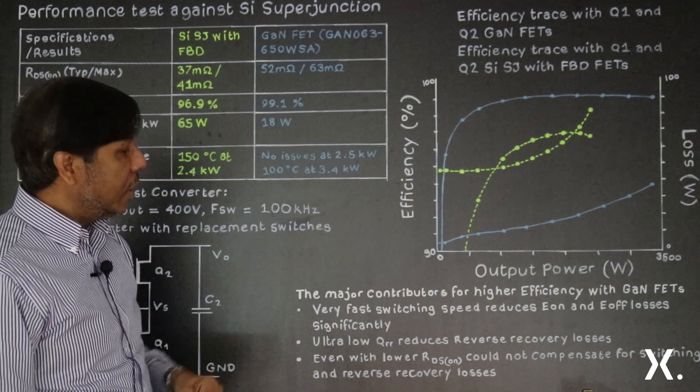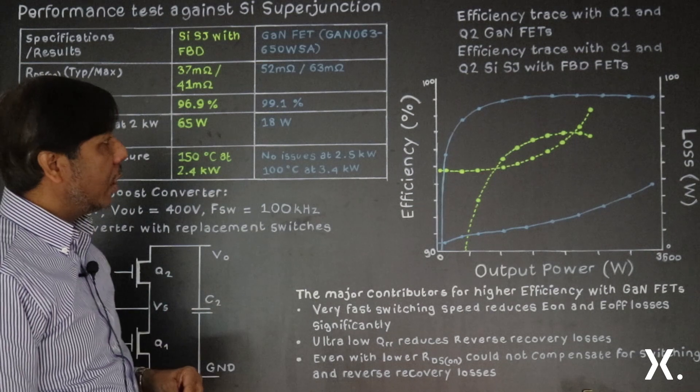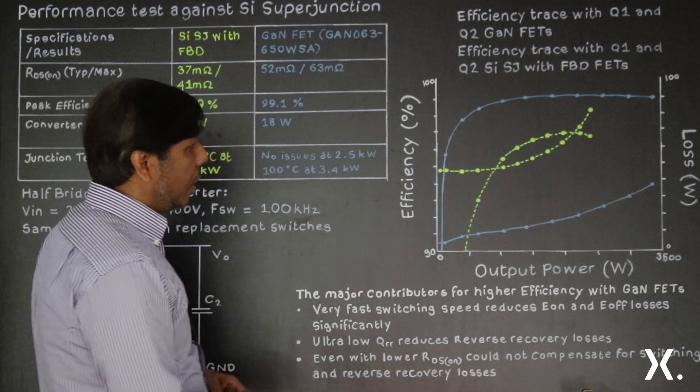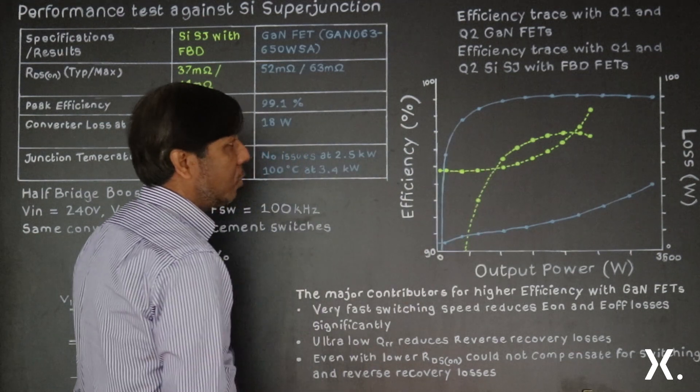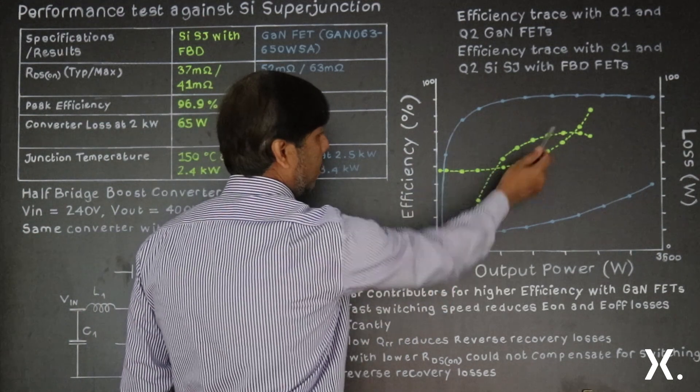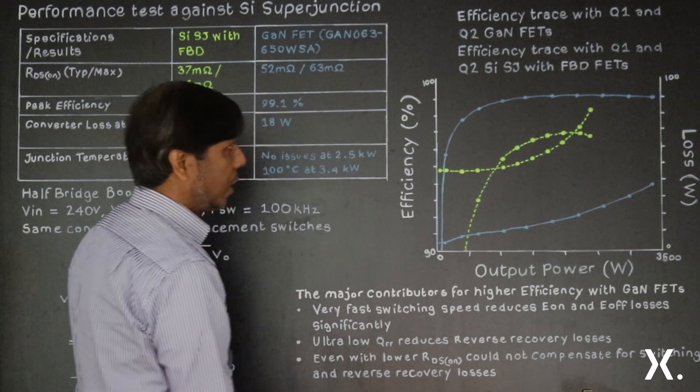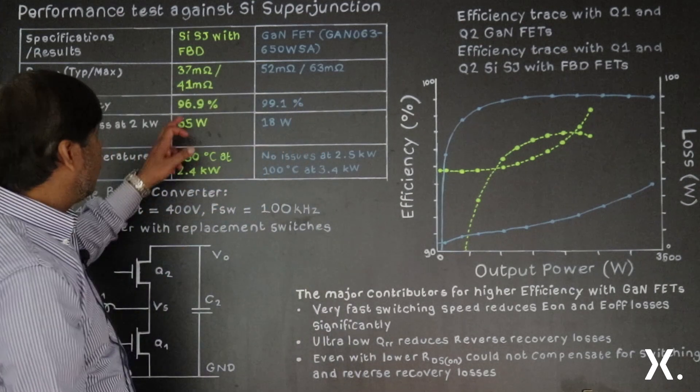When we did the efficiency sweep on this one, we can see that the peak efficiency for gallium nitride is about 99.1%, and the silicon-based is about 96.9%.